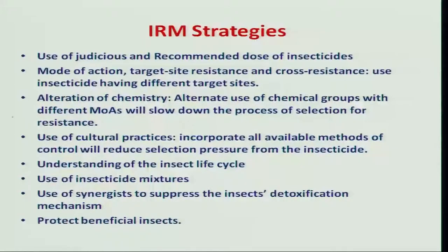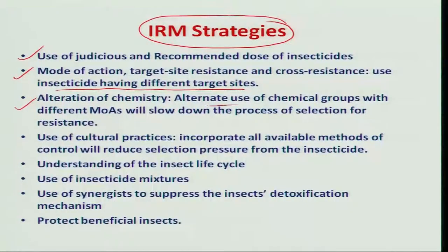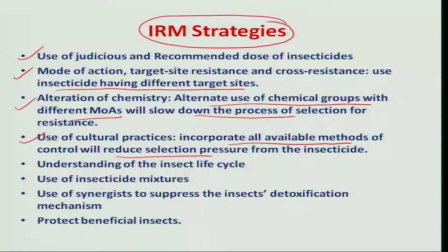More importantly, in the chemical component of pest management, how to overcome this resistance — various simple strategies have been recommended. First and foremost is use of judicious and recommended doses of insecticides. Most importantly, since insecticides have different modes of action, different target sites, and different cross-resistance patterns, we must use insecticides with different target sites and modes of action. Alternating chemicals with different modes of action will certainly slow down the selection process. Cultural practices, the basic tactics in pest management, can also be incorporated to reduce selection pressure.